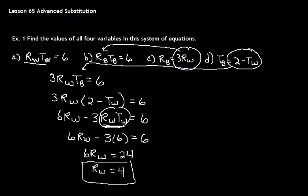So if RW is 4, we can find TW. If this is 4, we would have 4TW equals 6. TW equals 6 fourths, or 3 halves.